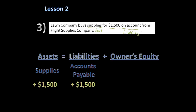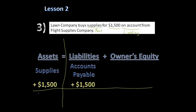Breaking this into left and right sides: on the left we have $15,000, and on the right we also have $15,000. Since $15,000 equals $15,000, our equation is still balanced.